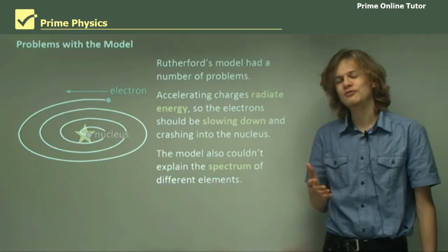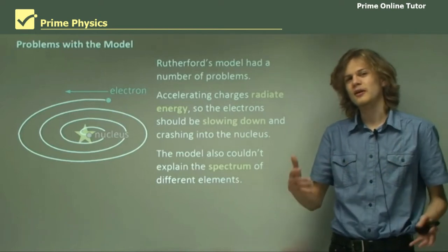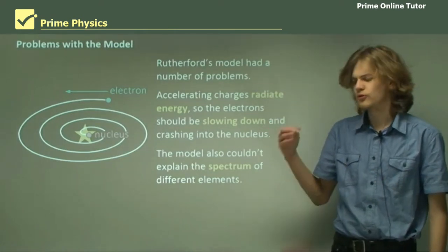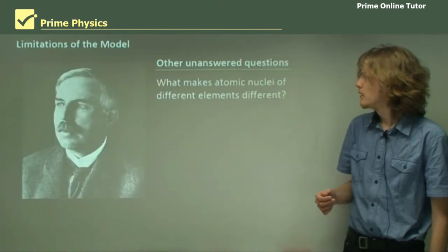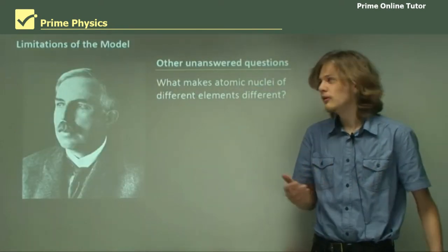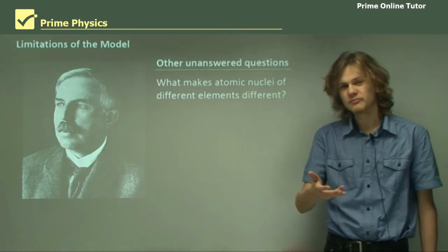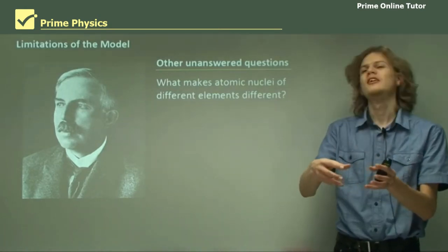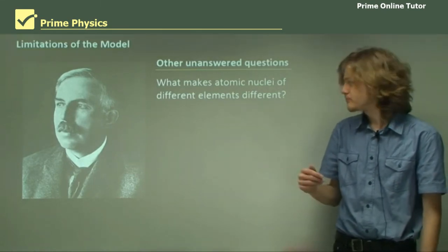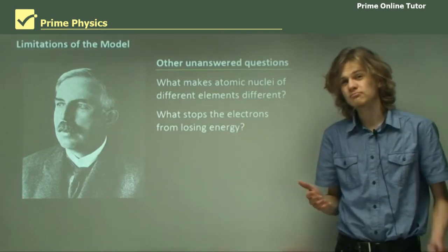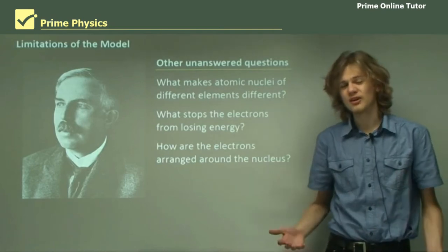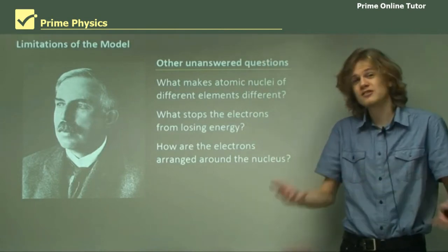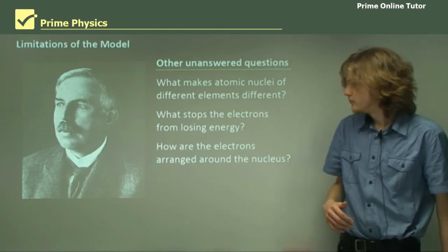The model also couldn't explain the spectrum of different elements. A spectrum is a series of glowing lines that's produced by an element when it's heated up. We learned a little bit about that in module four, which was from Ideas to Implementation. So, there are a few other unanswered questions of Rutherford's model. What makes an atomic nucleus of different elements different? We know that some heavy elements have a nucleus that's much, much heavier than their atomic number. And this model couldn't really explain that. There's nothing to stop the electrons from losing energy. We don't know how the electrons are arranged around the nucleus. Are they all orbiting at the same distance? Or are they all orbiting at different distances? If they're different distances, what makes them different? If they're the same, what stops them from crashing into each other?